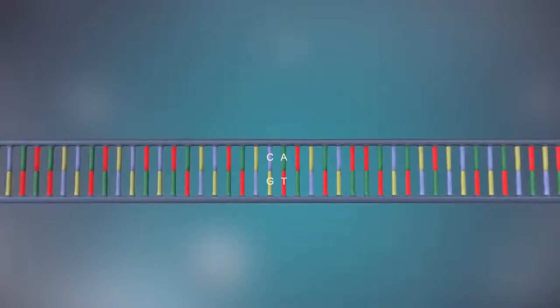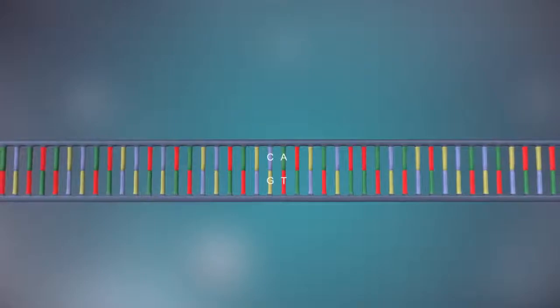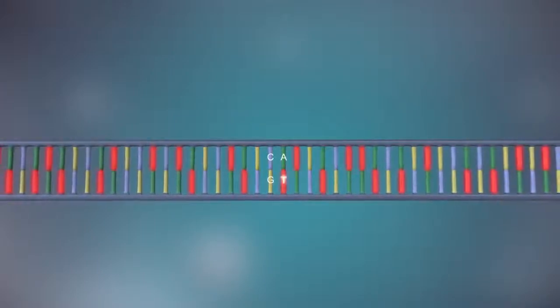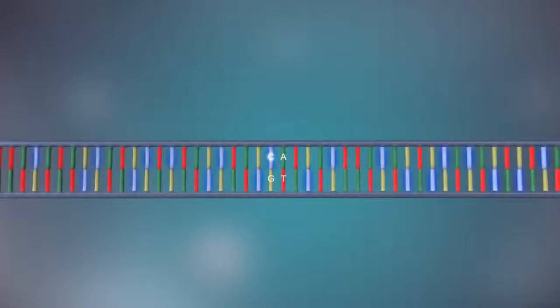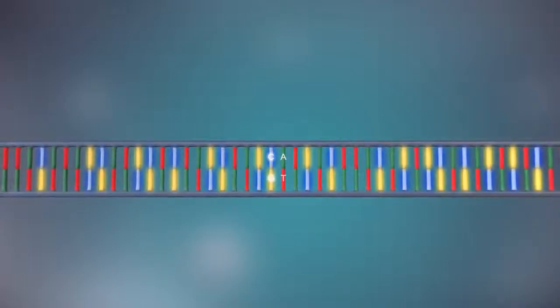The two strands are complementary. This means that wherever there's a T in one strand there will be an A in the opposite strand, and wherever there's a C there will be a G in the other strand.